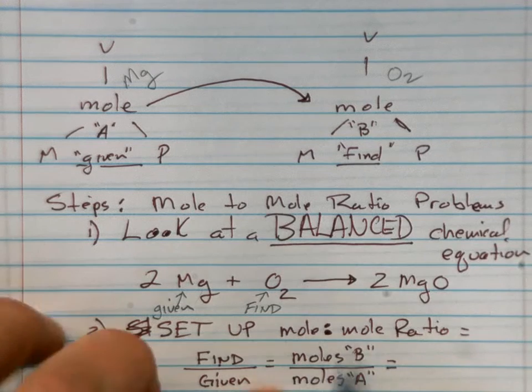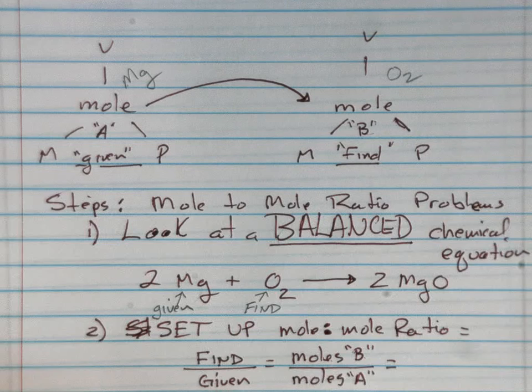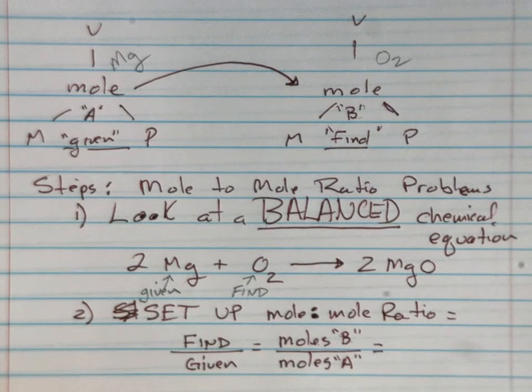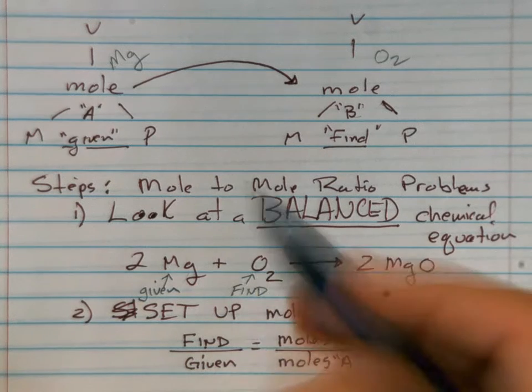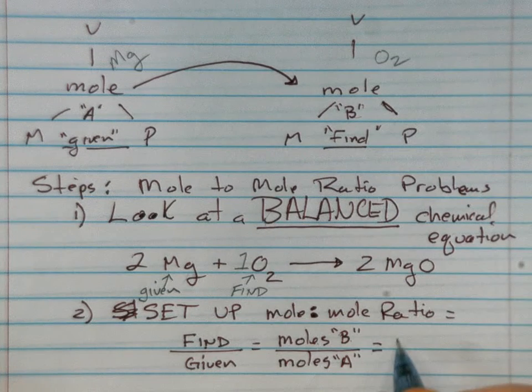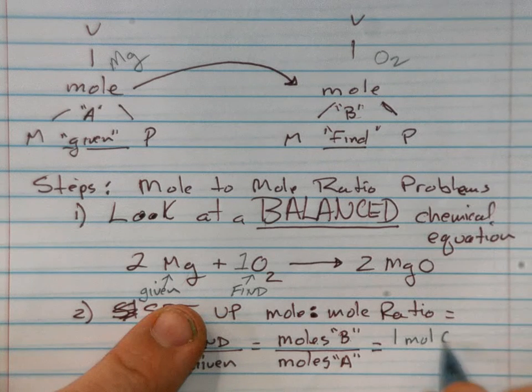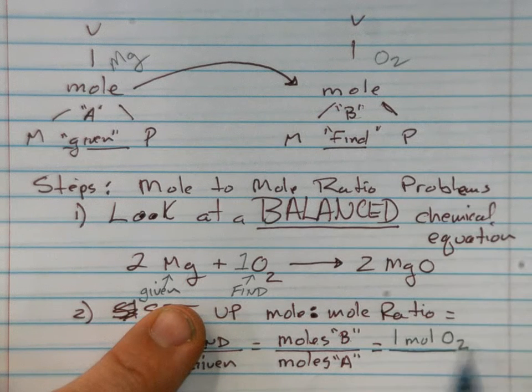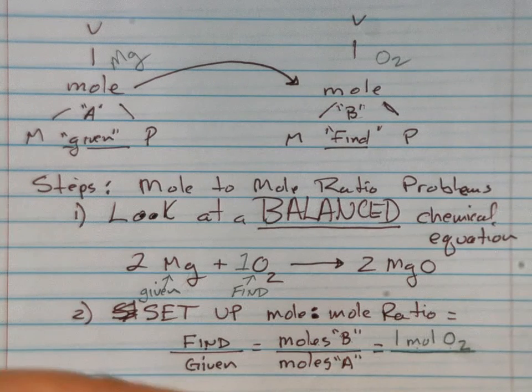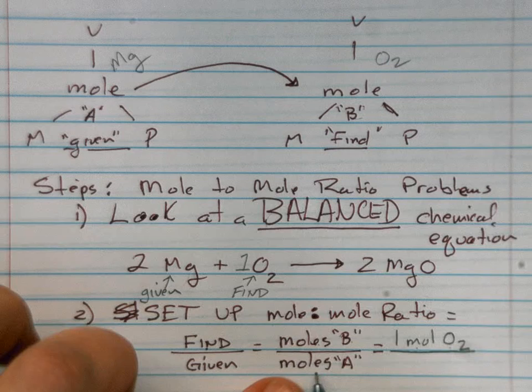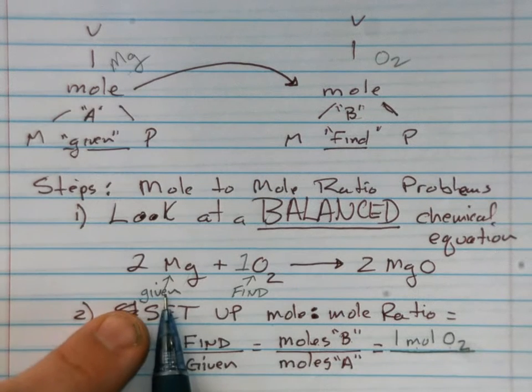In our balanced equation, how many moles of B, which is O2, do we have in our balanced equation? Just one, there's an invisible coefficient one right there. So we're going to say 1 mole O2. And our moles of A, which was the given, which is magnesium, how many moles of magnesium in the balanced equation? Two.